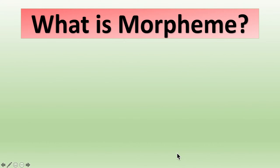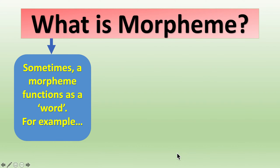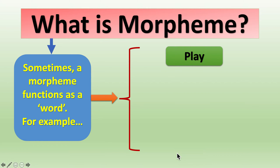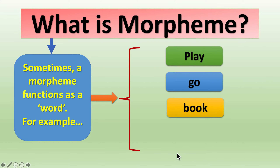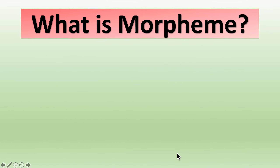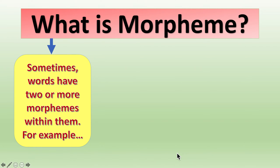Sometimes a morpheme functions as a word. For example, 'play' is a morpheme and it functions as a word. 'Go' is a morpheme and it functions as a word. Likewise, 'book', 'move', and so on.